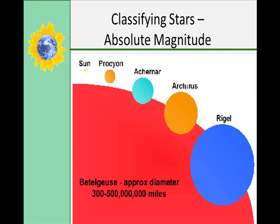Another method of identifying a star's brightness is to imagine that all stars are at an equal distance away. This is the star's absolute magnitude, and gives a more accurate indication of a star's true brightness. Our sun's absolute magnitude is 4.83, just to give you an idea.